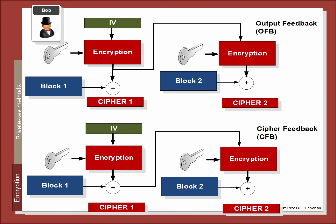Another method is output feedback, or OFB. With output feedback, we take the output just before the exclusive-OR and feed that into the next stage, rather than the cipher text itself. That gives our output, and this output then goes on to the next stage.